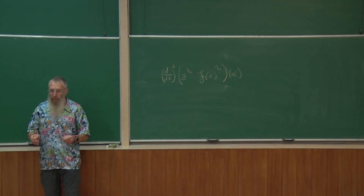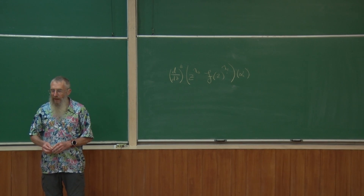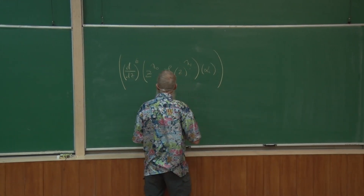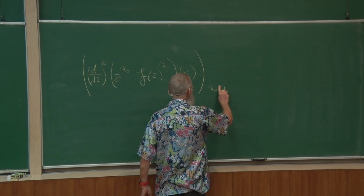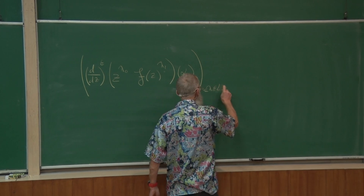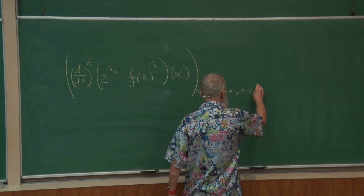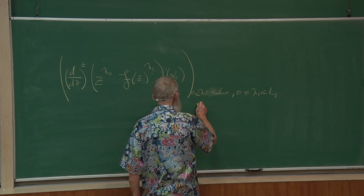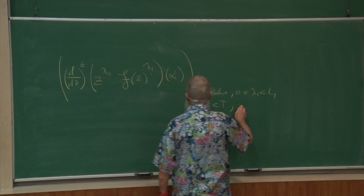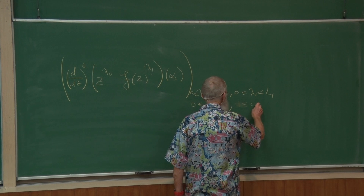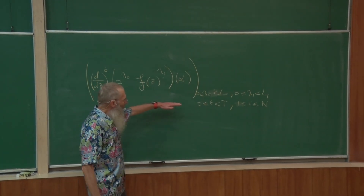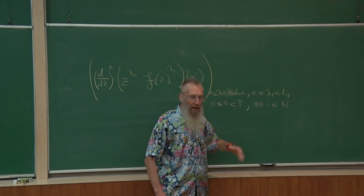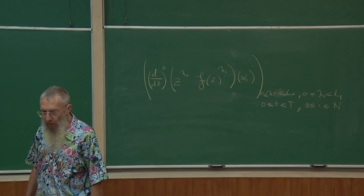We took the derivatives at the points alpha for which z and f of z are algebraic. So we have t, i, lambda_0, lambda_1. The first step was a linear combination with lambda_0, lambda_1 of these values which is 0 — it's the existence of an auxiliary function. The second step was the zero estimate, where we prove that one of these derivatives is not 0. So if you look at this proof, we are dealing with a very big matrix where on one hand you have lambda_0, lambda_1, and on the other hand the variable t, where t is between 0 and capital T and i is between 1 and n.